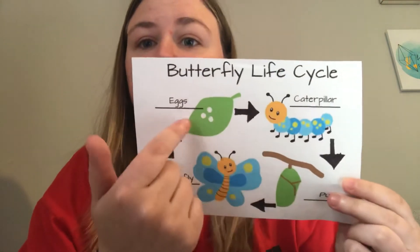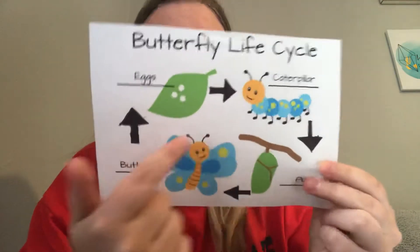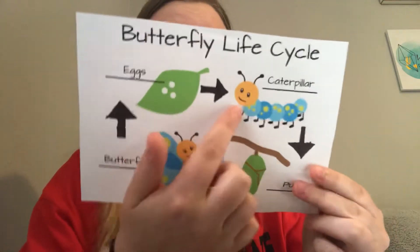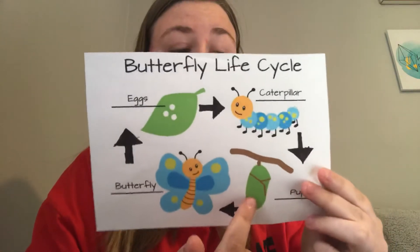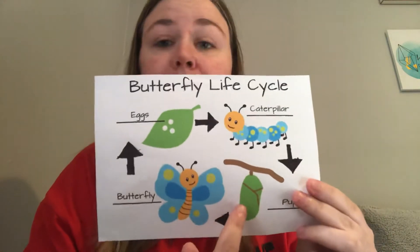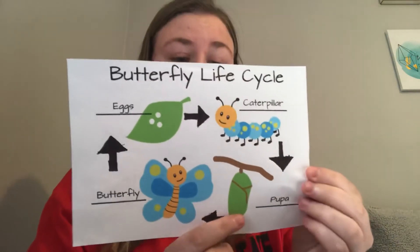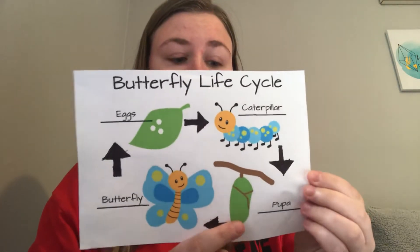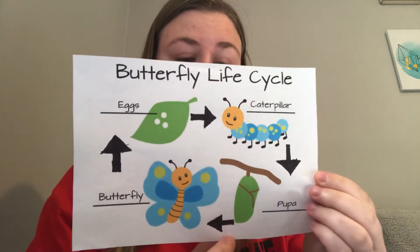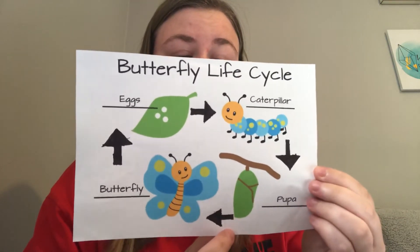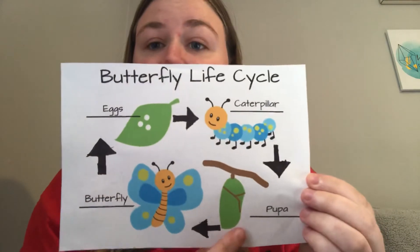So first the egg, then the caterpillar comes out of the egg. Then the caterpillar makes a covering around themselves called a cocoon and they become a pupa. This is the third stage of the life cycle. It stays in the cocoon until it grows wings and becomes a butterfly.